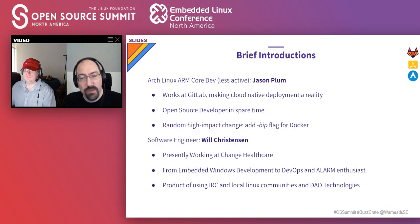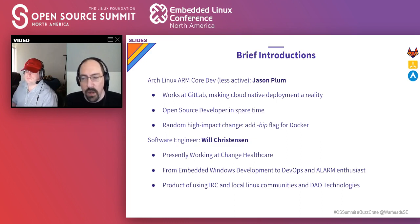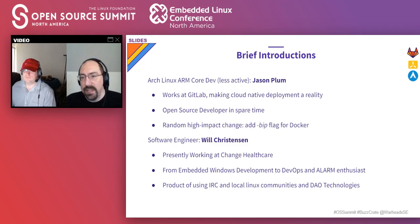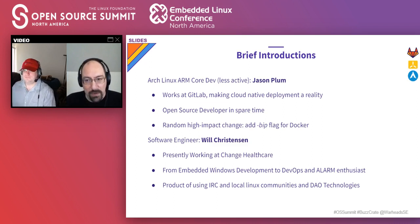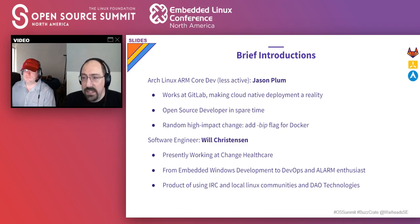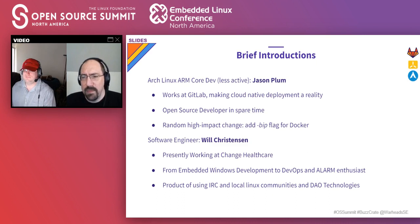I am Jason Plum, a developer with Archlytics ARM. I currently work at GitLab doing cloud-native deployment, making some crazy things a reality. I am an open source developer in my spare time, working primarily in OSI-compliant licenses. A random tidbit: I inadvertently added the bridge IP flag to Docker some years ago, never knowing what the people at Flannel and Kelsey Hightower would eventually do with it.